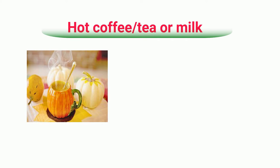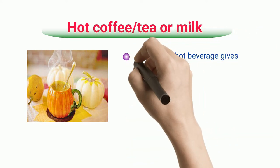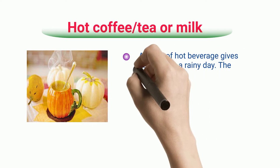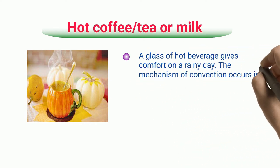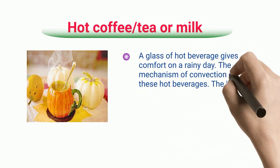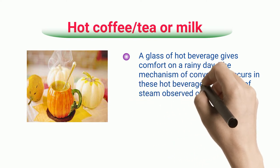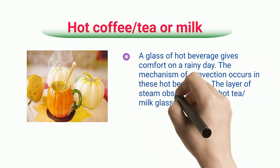Hot Coffee/Tea or Milk: A glass of hot beverage gives comfort on a rainy day. The mechanism of convection occurs in these hot beverages. The layer of steam observed on the hot tea or milk glass is the warm air, replaced by cold air.